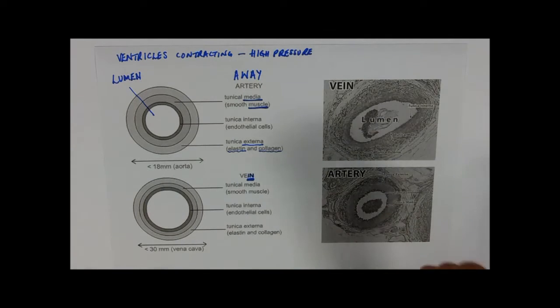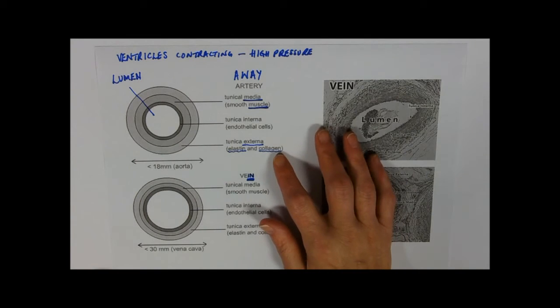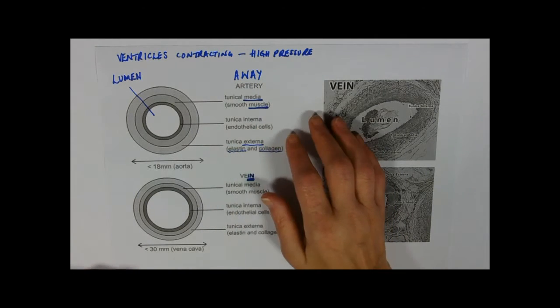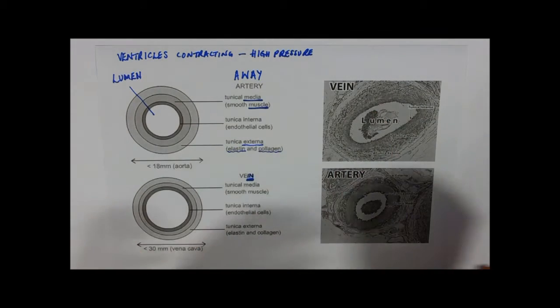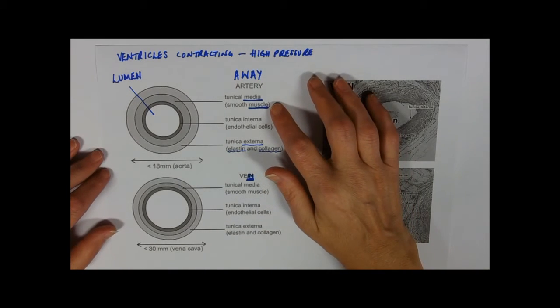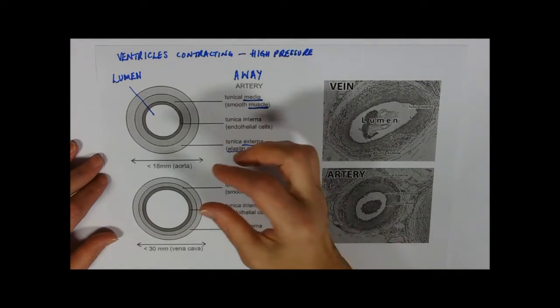The elastin tissue and the muscle tissue in the arteries, and particularly in arterioles, which are the next smallest—so it goes from the aorta to the arteries to the arterioles. In the arterioles, they're actually controlling flow of blood, so that muscle is used to regulate the diameter of the arterioles.